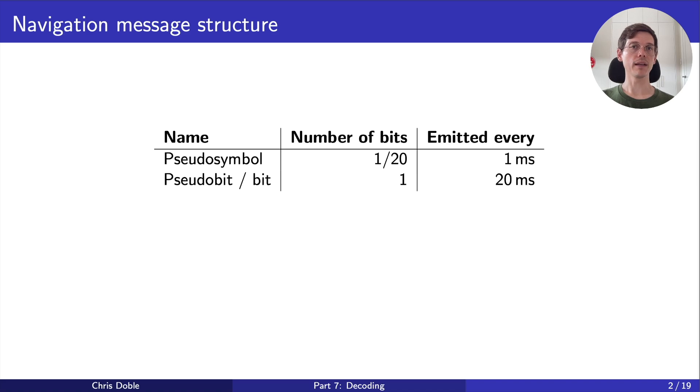Thankfully, patterns in the pseudo-bits allow us to eventually determine the mapping, turning them into regular bits. Bits are collected into groups of 30 to make words. A word is a grouping of bits, where some of them are used for data, and some are used for error detection and correction.